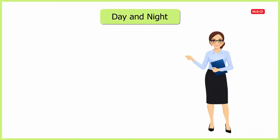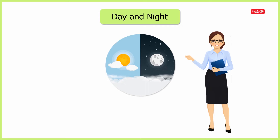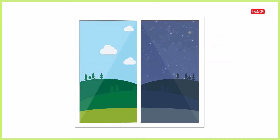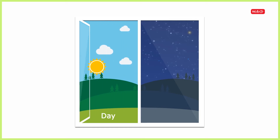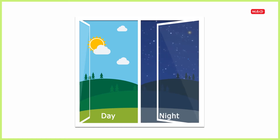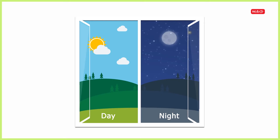Hello kids, in this video let us learn what is daytime and what is nighttime. Day is when the sun shines bright in the sky; during daytime we have light all around us. Night is when the sun sets and the moon shines up in the sky; during nighttime the sky is dark.